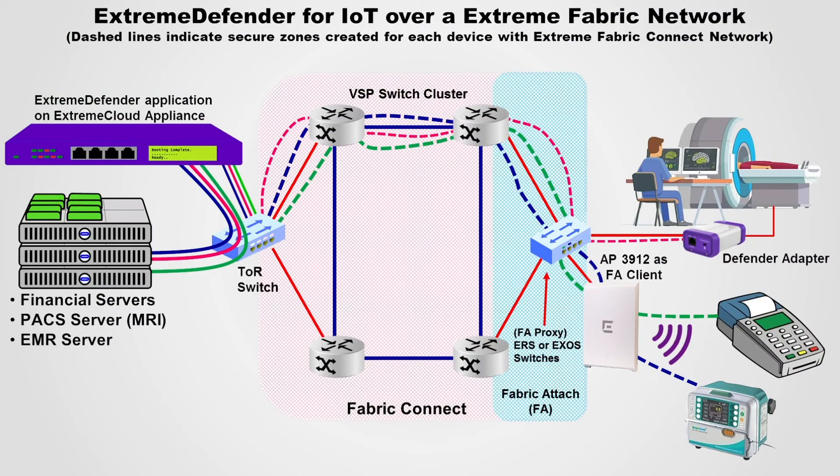Speaking of a network built on extreme networks hardware, extreme Defender is optimized for use with extreme fabric. The foundation of extreme's fabric solution is fabric connect, extreme's implementation of shortest path bridging. One of the main benefits of fabric connect is its ability to create secure zones at scale without complex configurations.